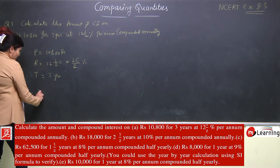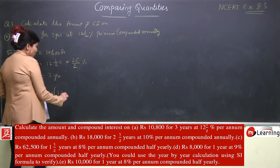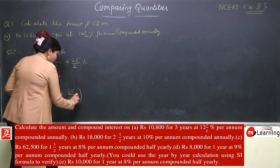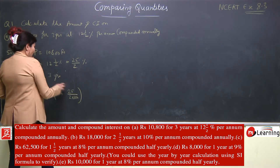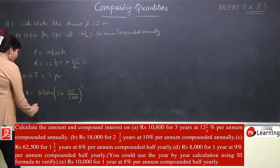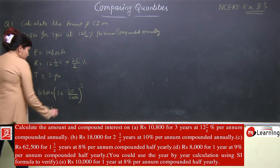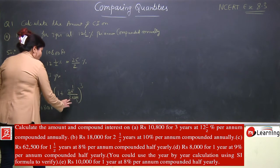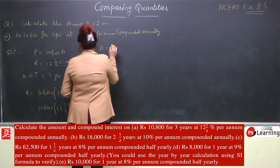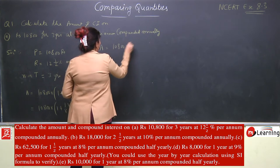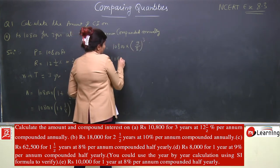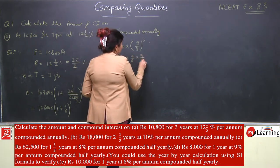Amount = P(1 + r/100)^n = 10,800 × (1 + 25/200)^3. The 2 from the fraction and 100 from formula combine to give 200. This simplifies to 10,800 × (1 + 1/8)^3 = 10,800 × (9/8)^3.